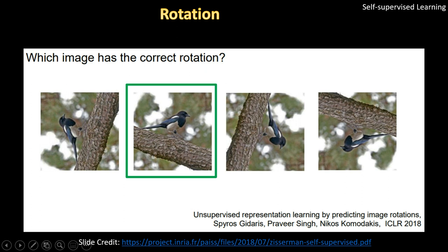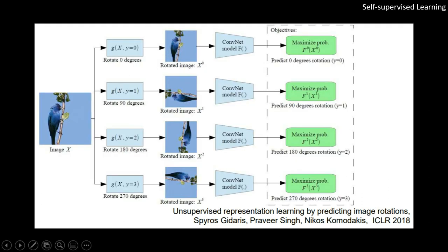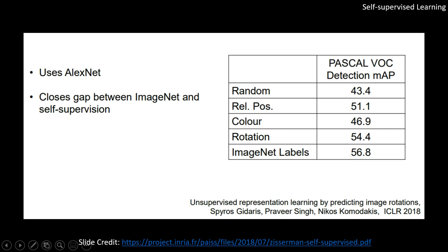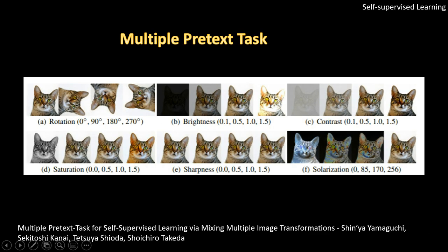Another pretext task is predicting the rotation. You just rotate the image and the pretext task is to predict the degree of rotation. As you can see, you take a random image, no labels needed, rotate it, and task the network to predict whether it's 0, 90, 180, or 270 degrees. Rotation pre-training also improved results compared to random initialization.